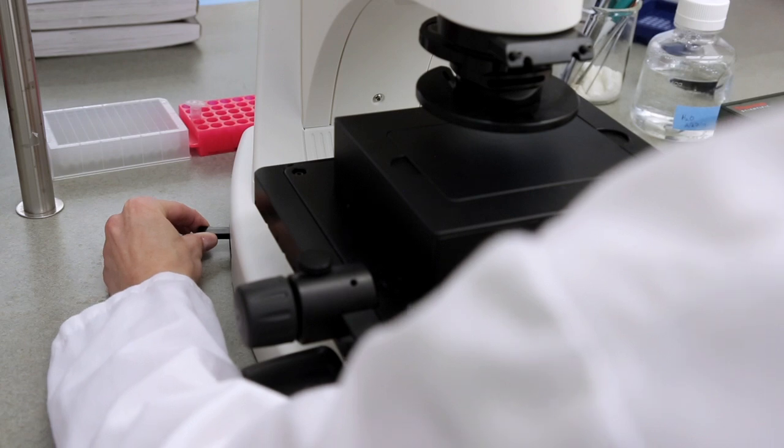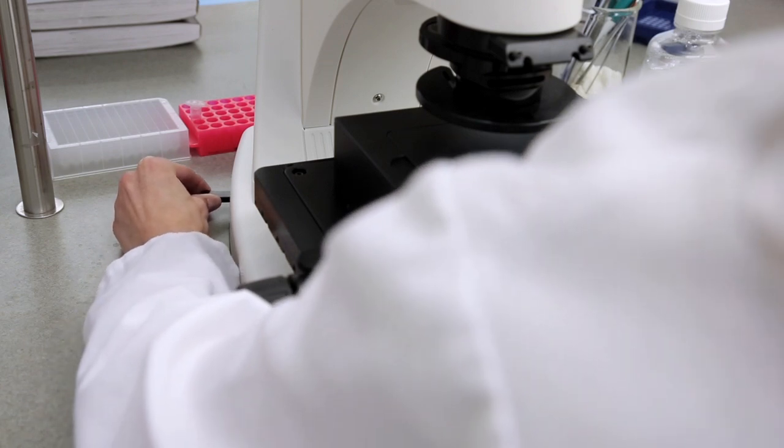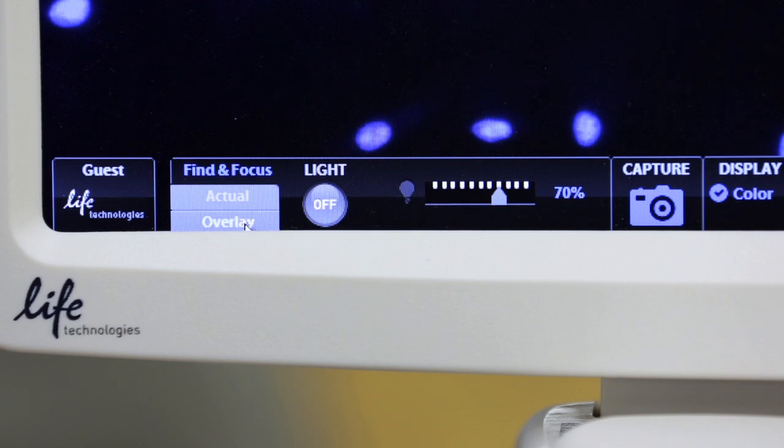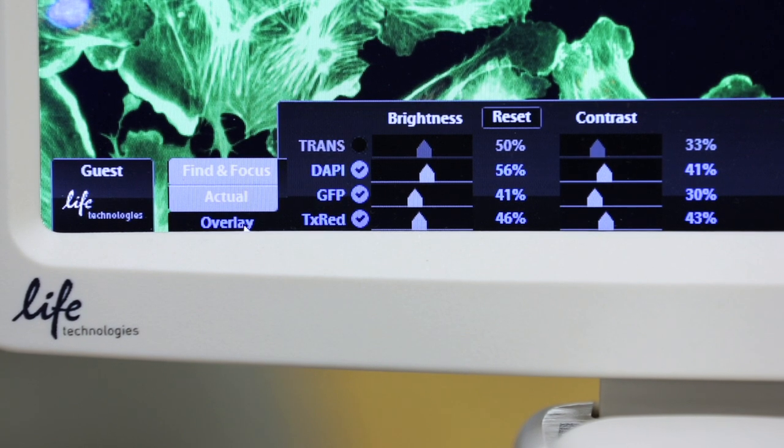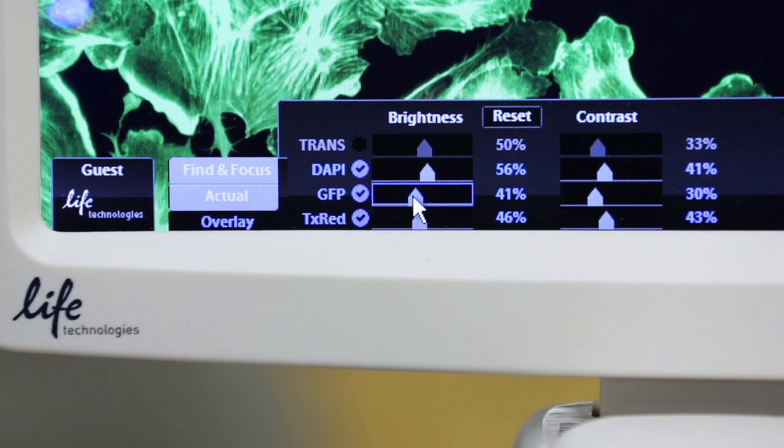Color channels are changed by sliding the lever on the side of the instrument. Once the channels have been collected, you can overlay the images by selecting the overlay tab. The brightness and contrast of each individual channel can then be adjusted as necessary.